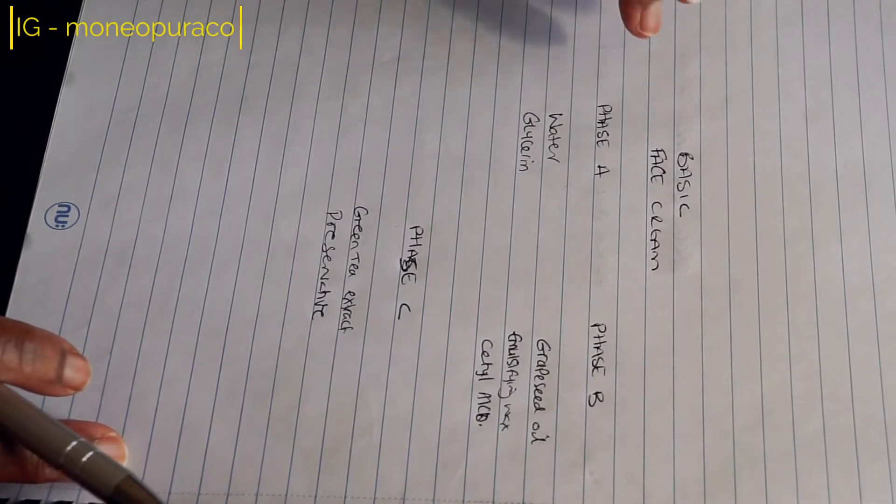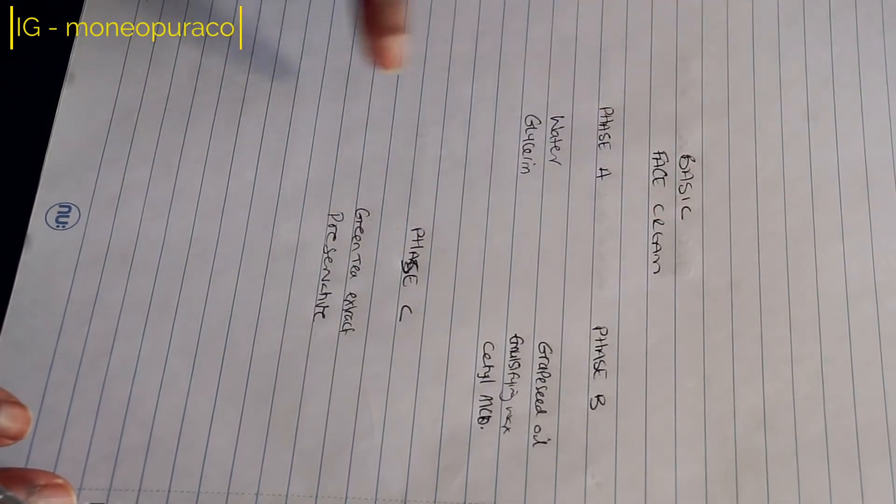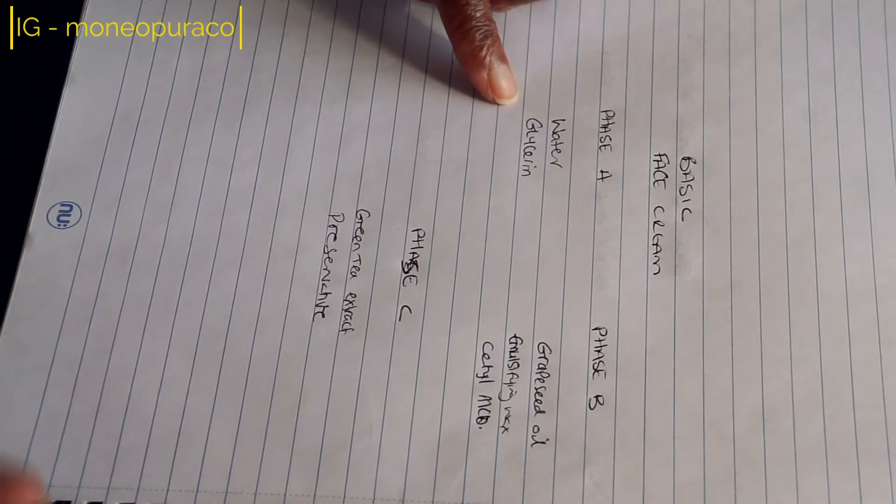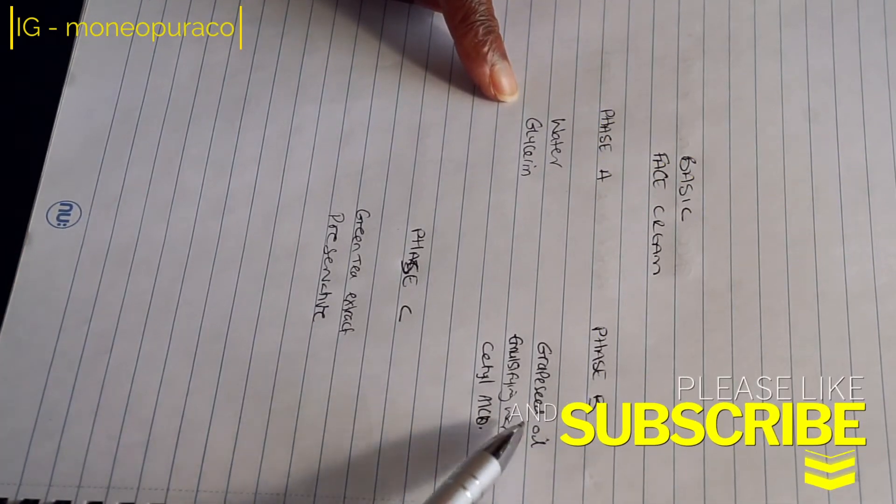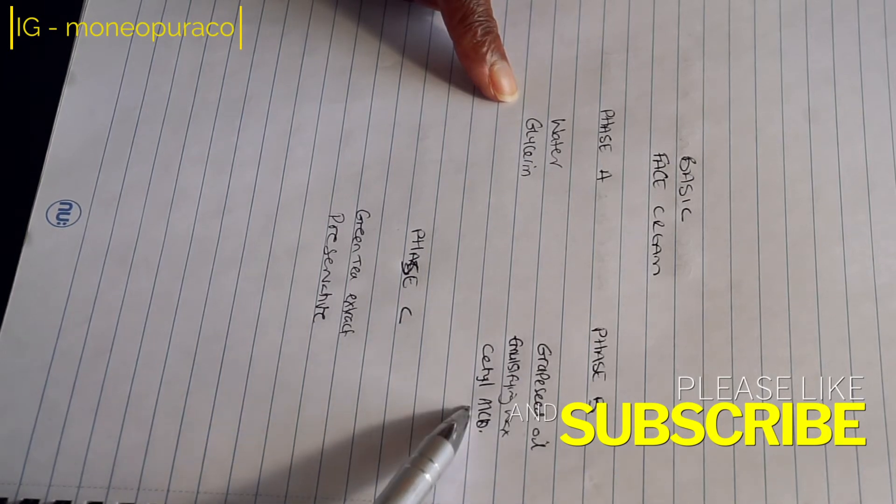We have three phases in this formula: phase A, phase B, and phase C. Phase A has our water and glycerin. Phase B has our grapeseed oil, emulsifying wax, and cetyl alcohol.